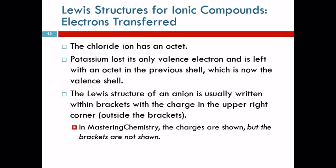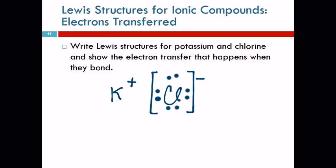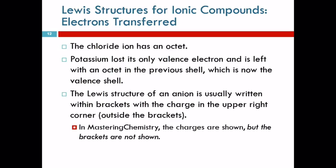The chloride now has an octet. Potassium lost its valence electron, but it's got the next layer down — it has an octet in the previous shell. When we draw Lewis structures, we're only looking at valence electrons, so however many electrons you start with, you end up with — we're not going to have core electrons suddenly showing up. We usually write the brackets for the anions.